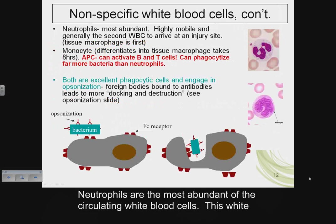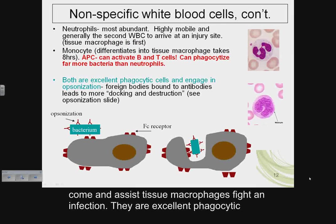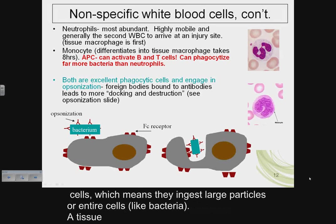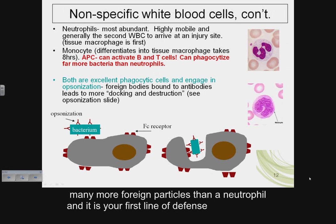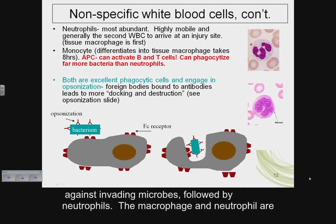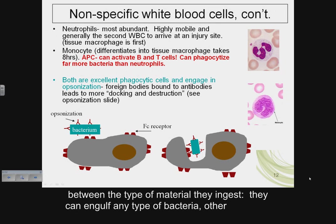Neutrophils are the most abundant of the circulating white blood cells. This white blood cell is extremely mobile and is the first traveling white blood cell to assist tissue macrophages in fighting an infection. They are excellent phagocytic cells, meaning they ingest large particles or entire cells like bacteria. A tissue macrophage is a mature monocyte and a very potent phagocytic cell — it can ingest many more foreign particles than a neutrophil and is your first line of defense against invading microbes.